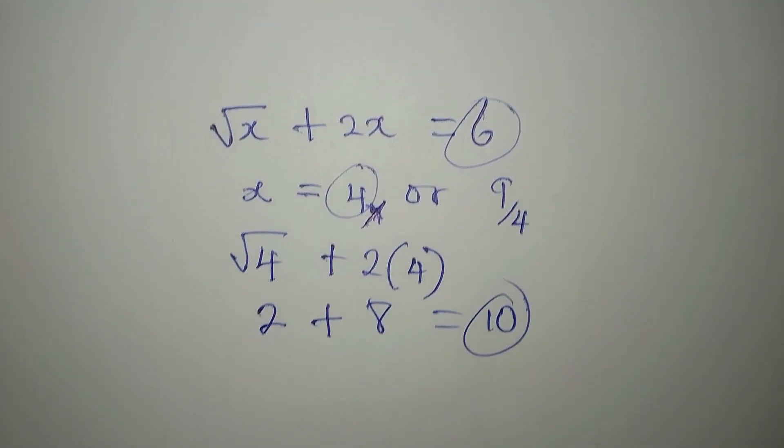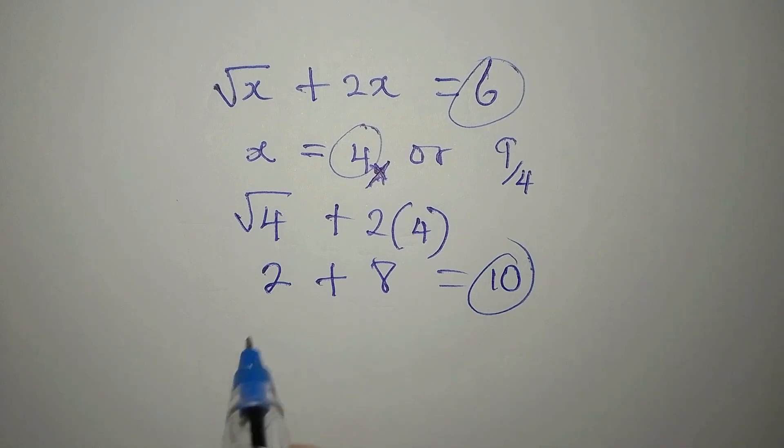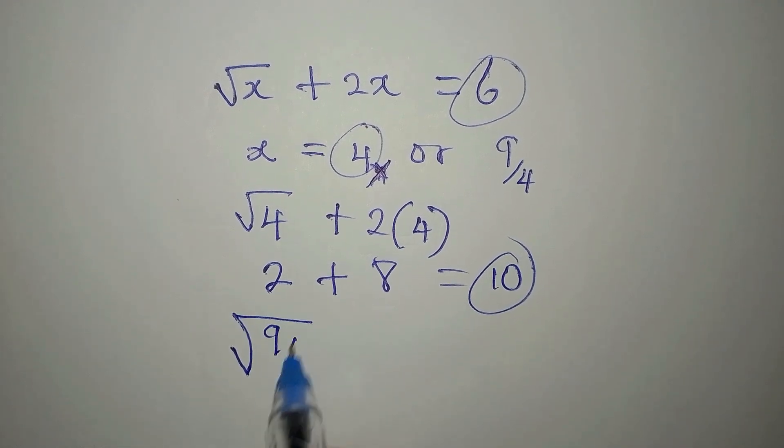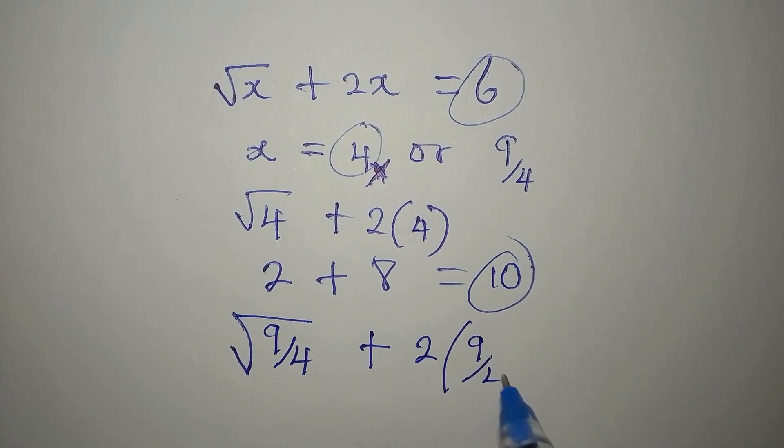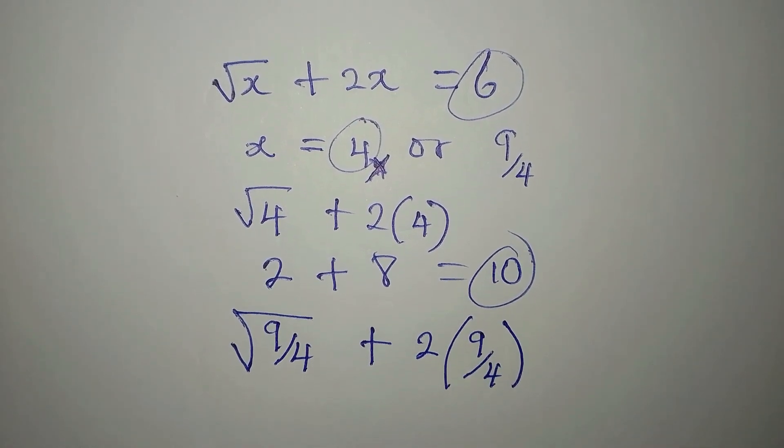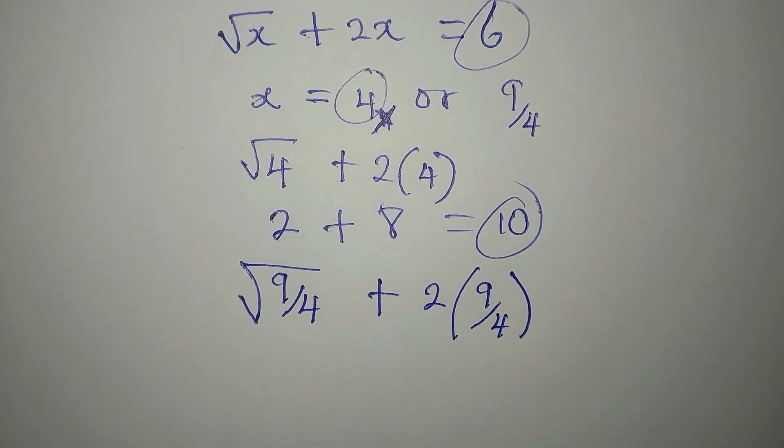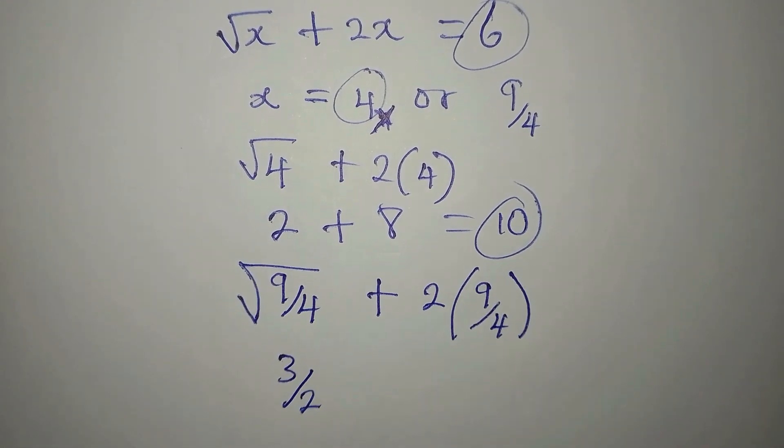Now, let's work with 9 over 4. We have square root of 9 over 4 plus 2 times 9 over 4. Now, will this give us 6? That's what we are trying to know. This is 3 over 2. Square root of 9 is 3. Square root of 4 is 2.